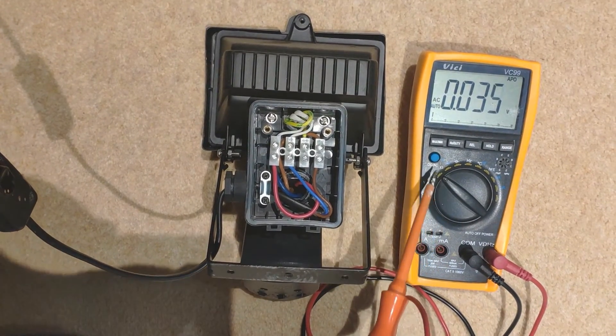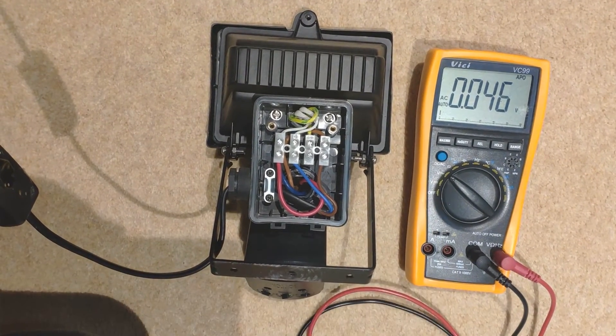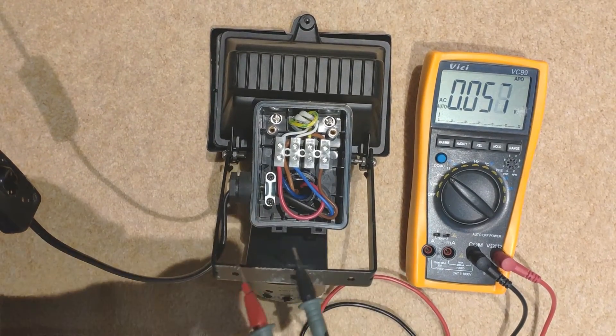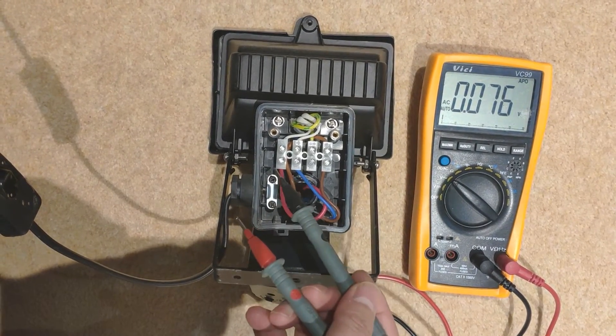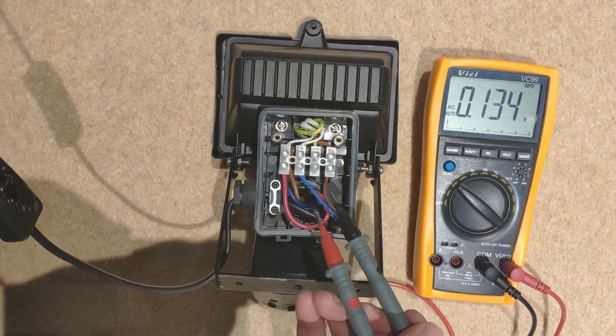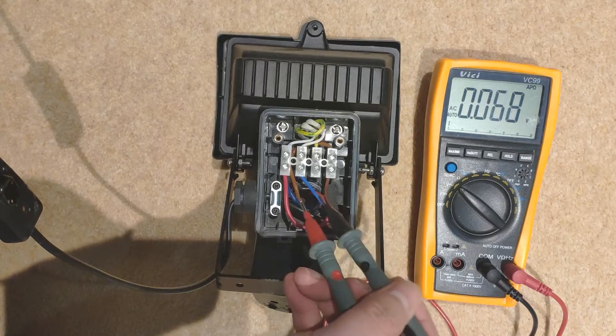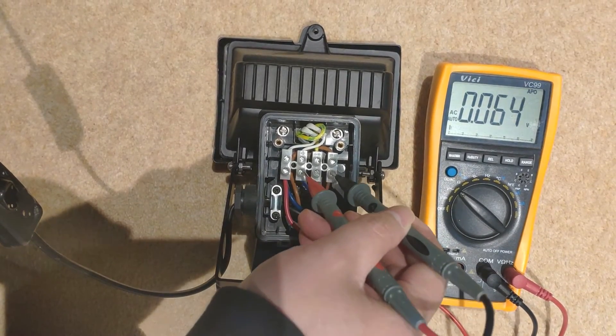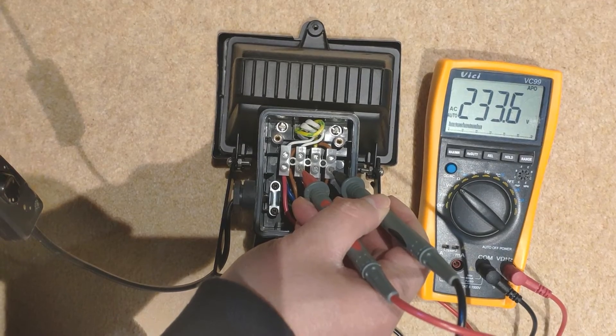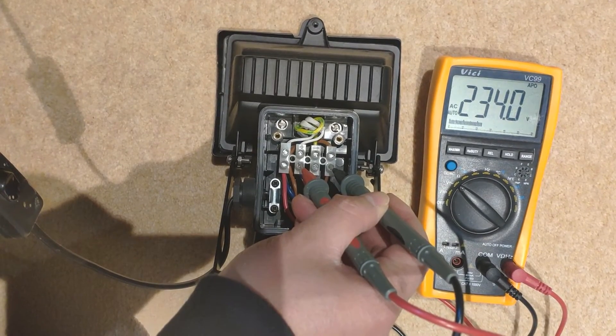Set the multimeter to AC voltage. Now we can measure the input. From left to right, this is pin 1, 2, 3, 4. Pins 2 and 4 are the input. We can measure the input voltage. It's 233V, which is normal.